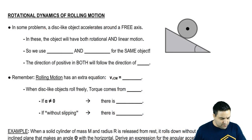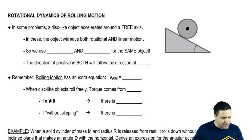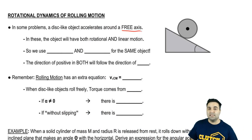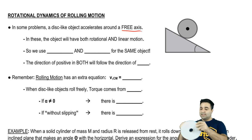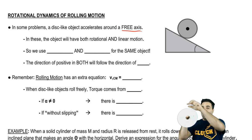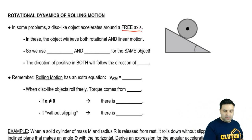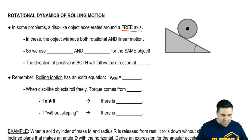So in some problems it says a disk-like object accelerates around the free axis. The free axis is like the toilet paper that instead of being fixed on the wall, it's free to move, so it rolls while moving.